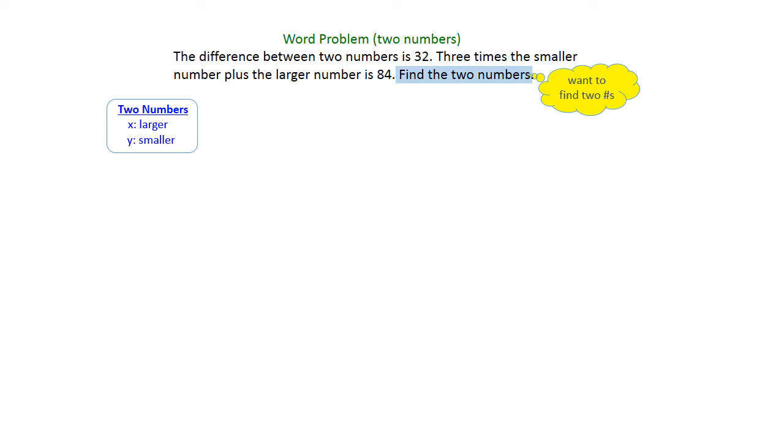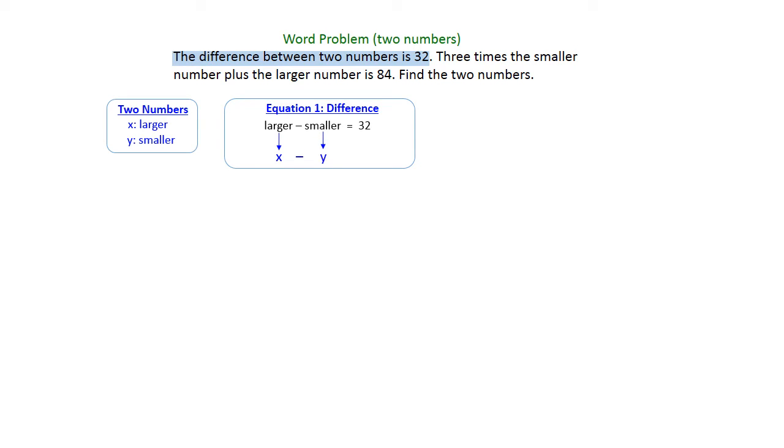So the first sentence tells us the difference between two numbers is 32. And we're going to take that literally, we're going to write the difference as our first equation, and we're going to take the larger number minus the smaller number and make that equal to 32. So we're going to have x minus y equals 32.